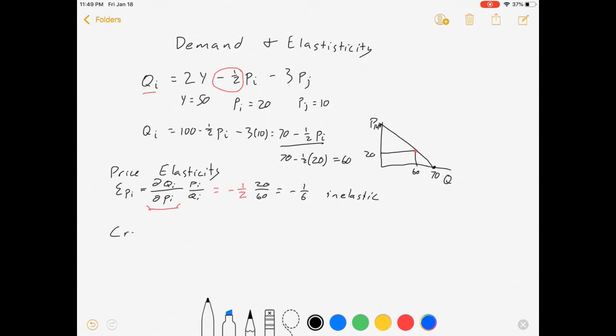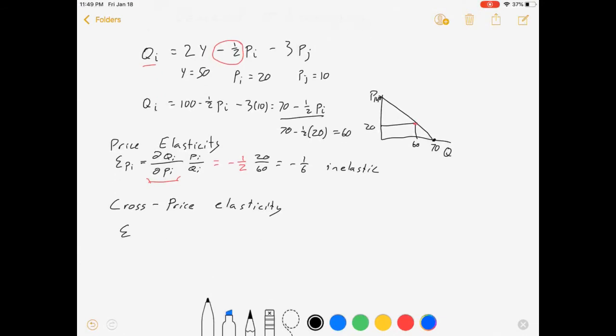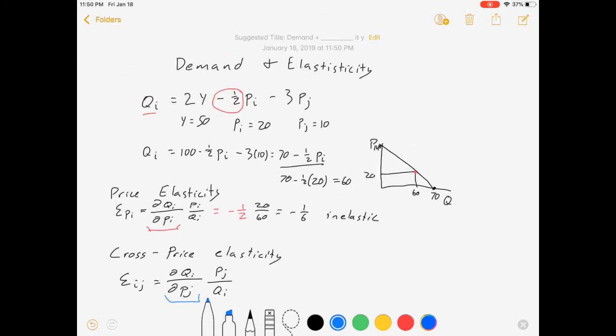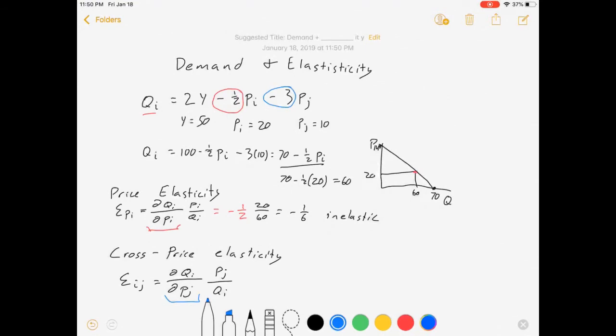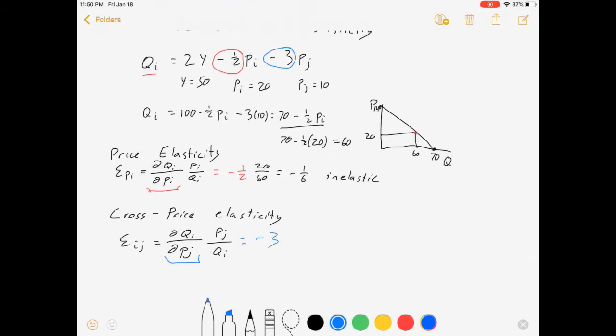Our cross price elasticity is very similar in how we solve for it. But instead of being interested in the price of good I, we're interested in the price of good J. So cross price elasticity might look something like this, DQI over DPJ times PJ over QI. And again, don't be afraid of this. I'm looking for the slope of the demand curve with respect to PJ. Well, that's here. This is the number attached to that letter. This is minus three times, let's see, PJ is 10. And Q is 60. This is minus a half, which is inelastic again.